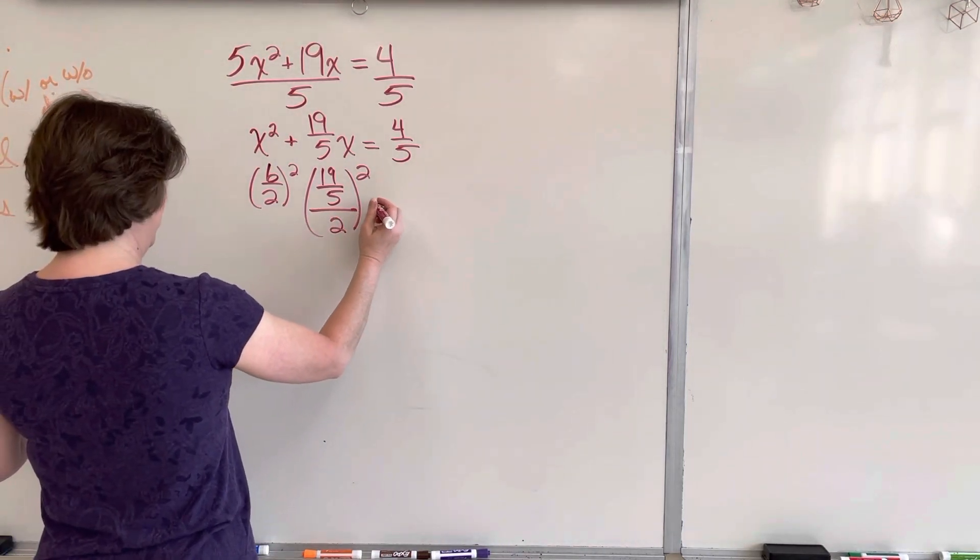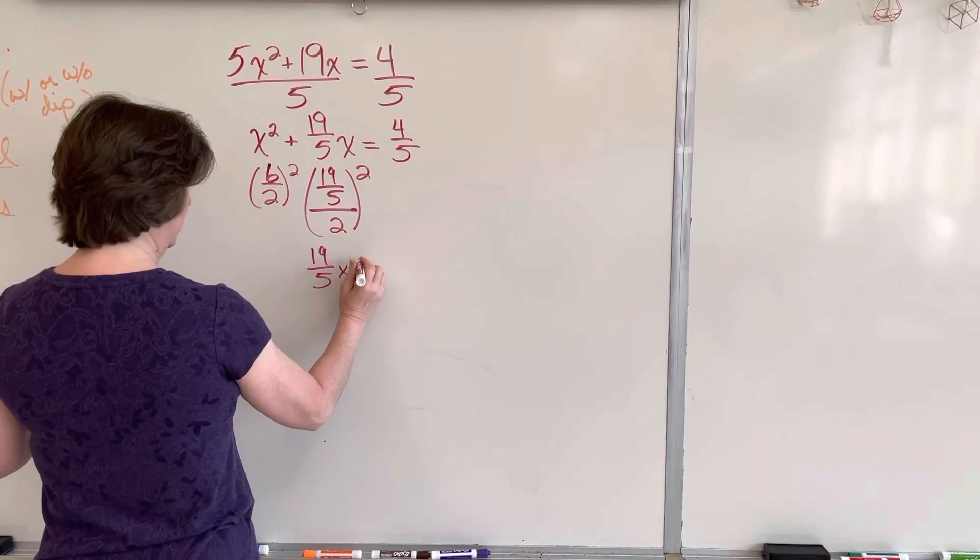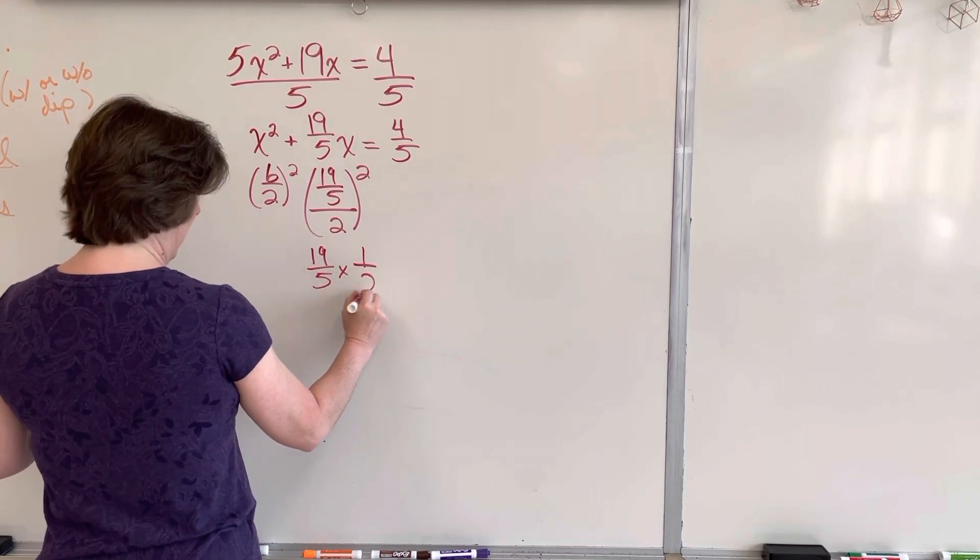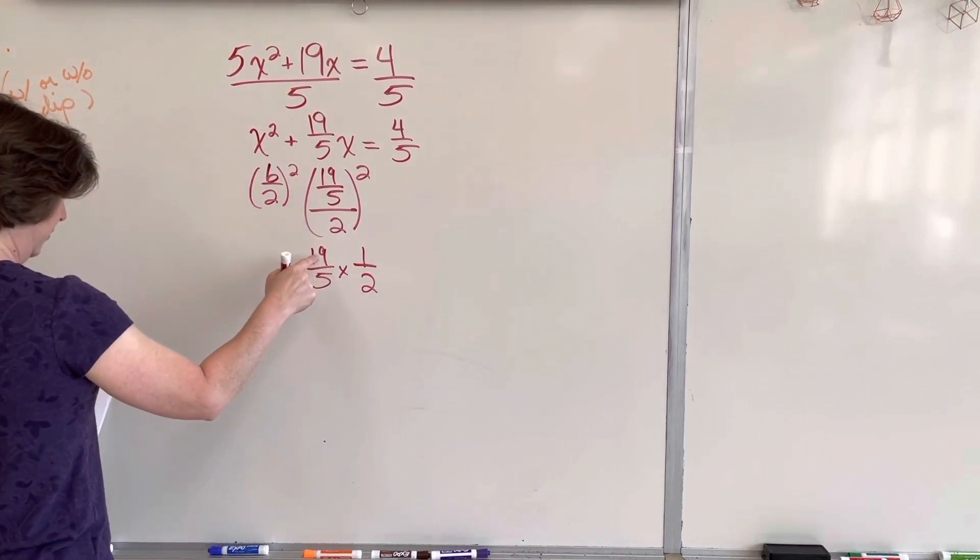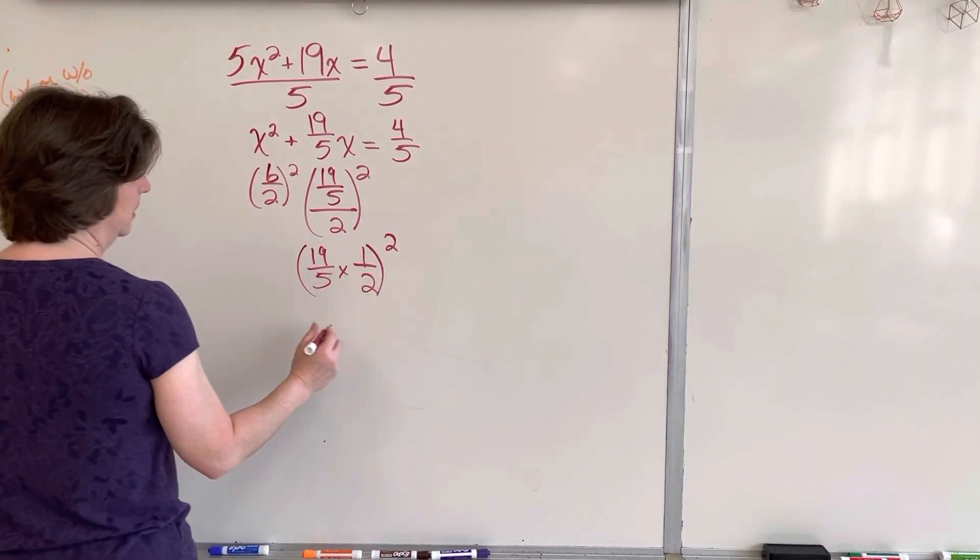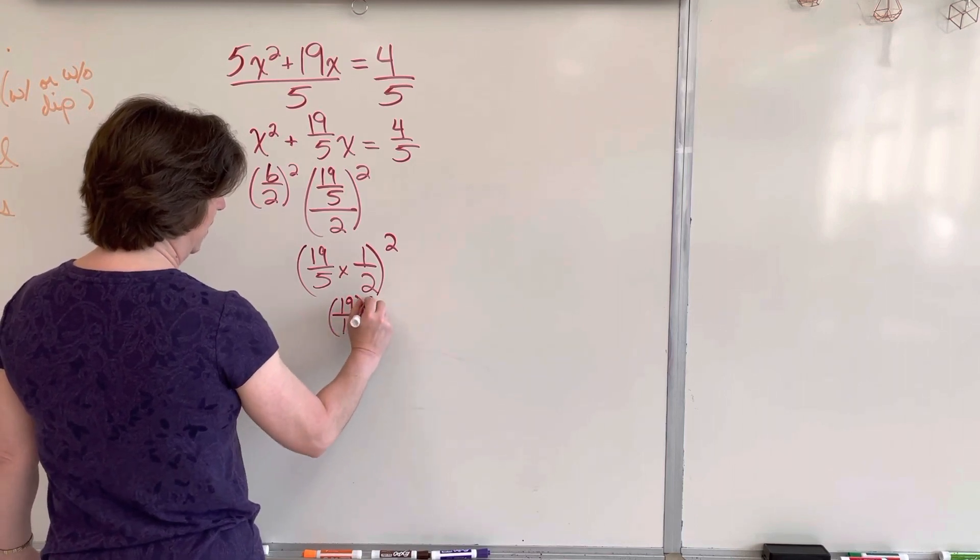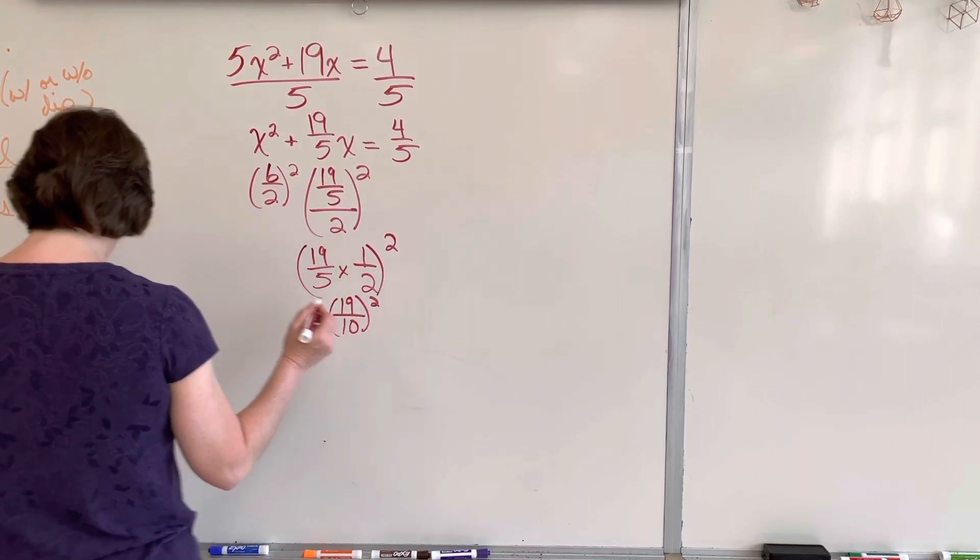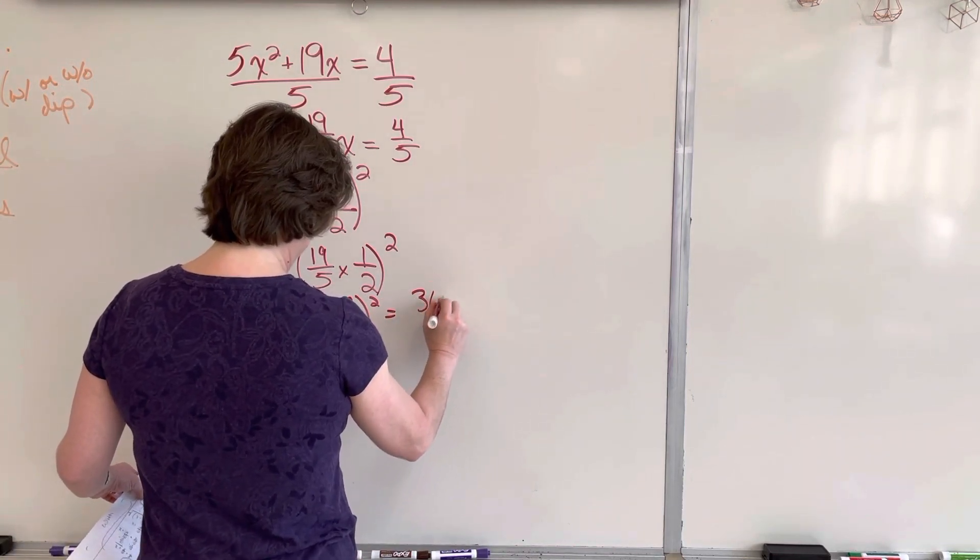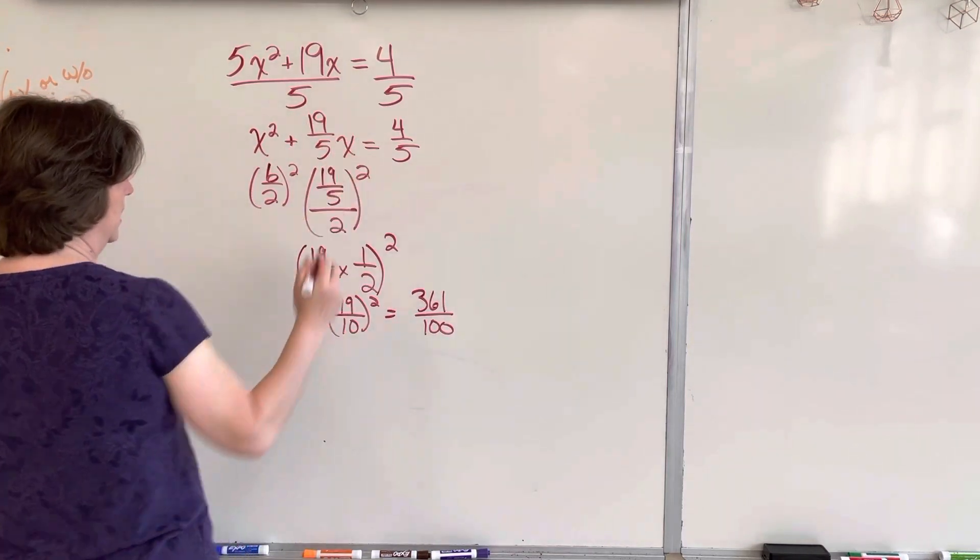So this is the same thing as 19 over 5 times, divide by 2 is the same as multiply by a half, right? Divide by 2 is the same as multiply by a half, and then I have to square it. So this is the same as 19 over 10 squared. 19 over 10 is 361 over 100. That's what I have to add to both sides.